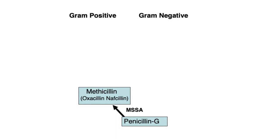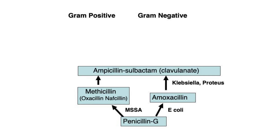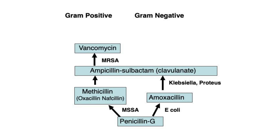Nafcillin and oxacillin effectively treat methicillin-sensitive Staph, abbreviated MSSA. Next, ampicillin and its oral alternative amoxicillin were created. This amino-penicillin not only covers the same gram-positives as penicillin but also kills some gram-negative bacteria, covering a relatively small percentage of E. coli, Proteus, and Klebsiella. To broaden coverage, the beta-lactamase inhibitor sulbactam was added to ampicillin and clavulanate to amoxicillin, increasing the percentage of susceptible E. coli, Proteus, and Klebsiella, and rendering these agents effective against MSSA.